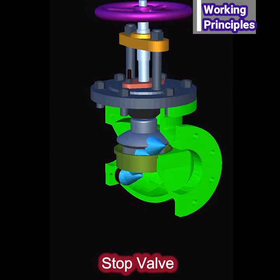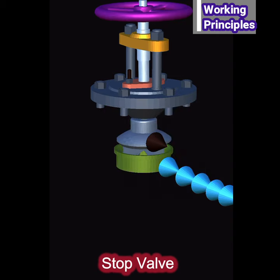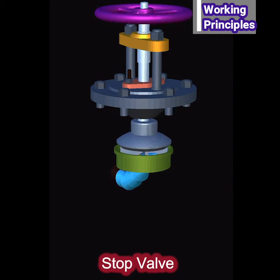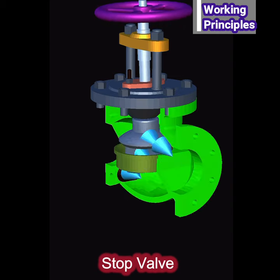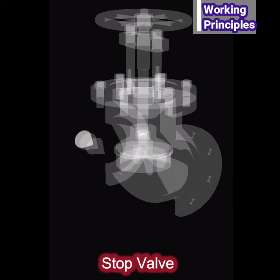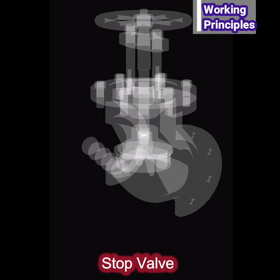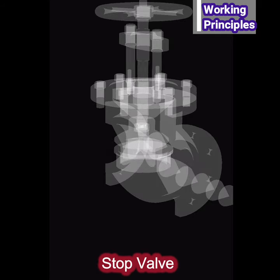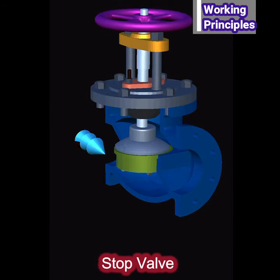When the valve sits over the valve seat, the passage of fluid is completely closed. The fluid passage may be partially or fully opened by moving the valve up by rotating the hand wheel. The clearance between the valve and valve seat regulates the flow of fluid out of a section.